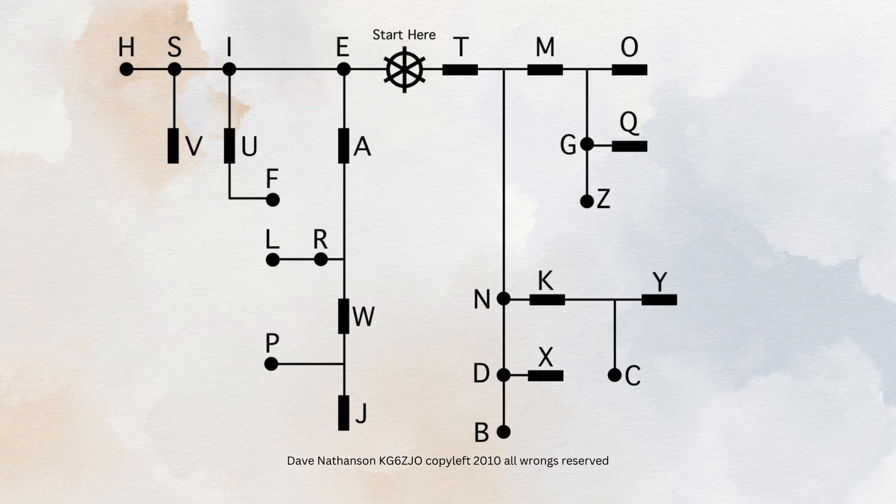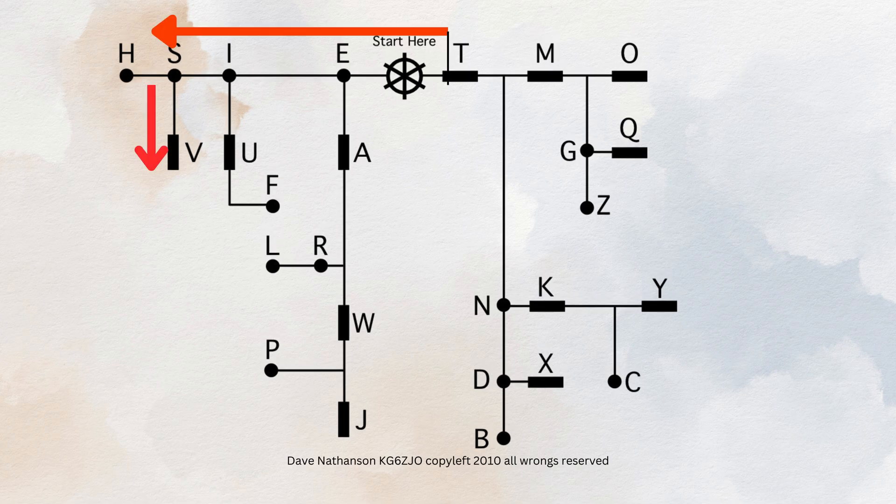For instance, three short blinks and one long blink. Start at the designated point, move three dots to the left, and one dash down is the letter V.